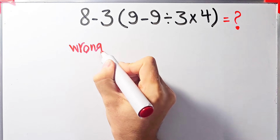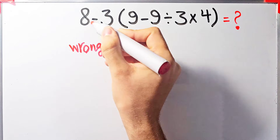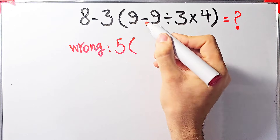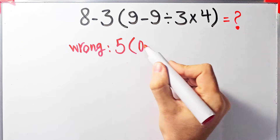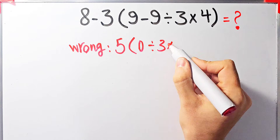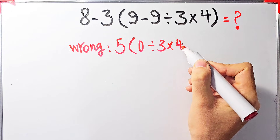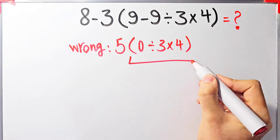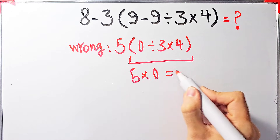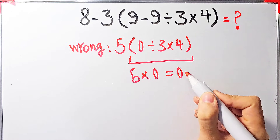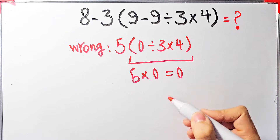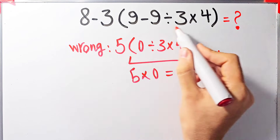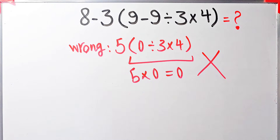Some people solve this question like this: they say 8 minus 3 equals 5, then 5 times 9 minus 9 which equals 0, divided by 3, then times 4 — that part equals 0, and 5 times 0 equals 0. They say the final answer equals 0, but this answer is definitely wrong.